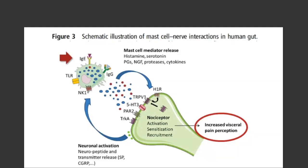Mast cells have other receptors beyond the IgE receptor — including IgG molecules that can recognize antigens and TLRs (toll-like receptors) that tend to recognize different types of microbes, both normal and pathogenic. Depending on the type of receptor stimulated and what is stimulating it, that can modify the type of results and effects from mast cell activation.